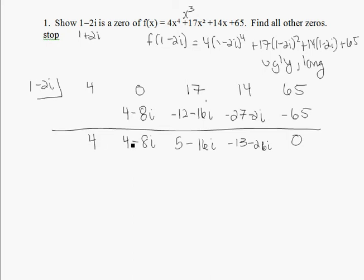Since 1 minus 2i is a root, because we've got a remainder of 0, I know its complex conjugate is also a root, which is 1 plus 2i. So now I'm going to do synthetic division with that. Note that this is a fourth-degree polynomial. I now have a cubic, but it doesn't have real coefficients, so we want to do synthetic division again, and hopefully these complex coefficients will go away.